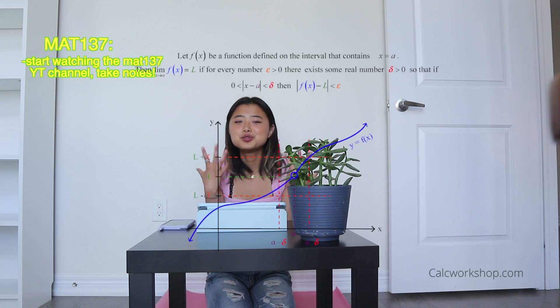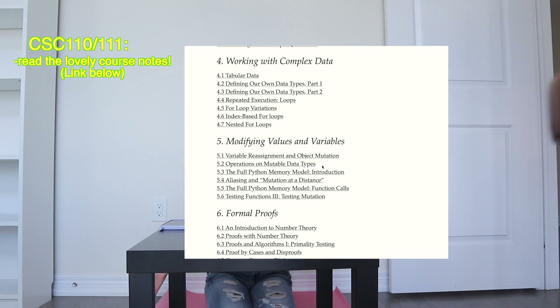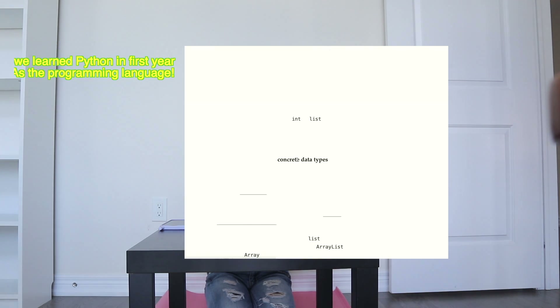Now, a little bit on how to prepare before school actually starts — just to give ourselves confidence and know what to expect. For MAT137, just go to the YouTube channel and start watching videos. Take out a notebook or use a note-taking app and take notes on Alfonso's videos. Units one and two were really steep learning curves for me because on top of numbers and letters, you also use the Greek alphabet and all these new symbols not used in high school calculus. So definitely watch the first two units. For CSC110 and CSC111, read the course notes — they are designed to teach you from scratch, even if you have no programming experience. It will definitely build up a good foundation because you learn Python in first year.